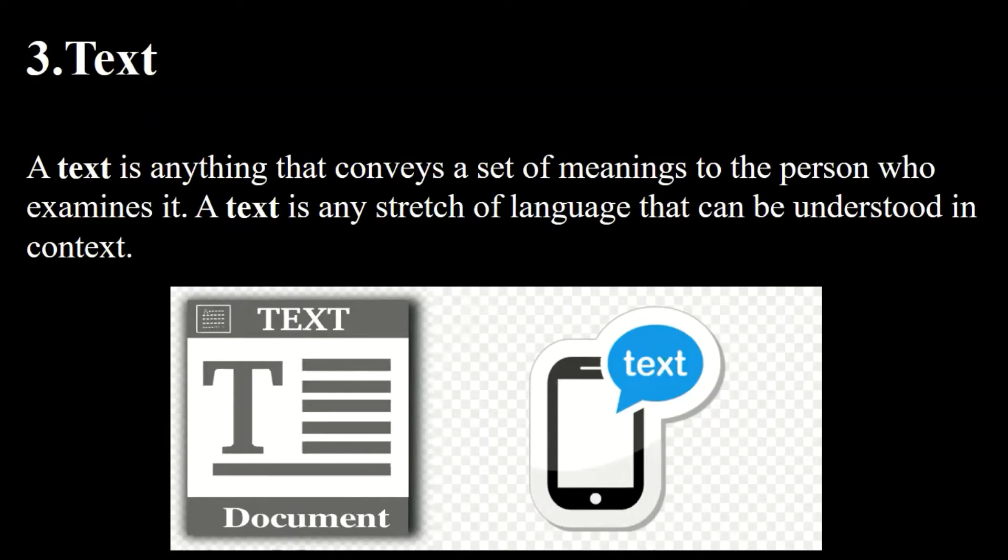That is called text data. So normally on the mobile phone we are texting someone, we are sending text images to another one. That is also called text. Text means collection of alphabets as well as numbers. So that is called text data.